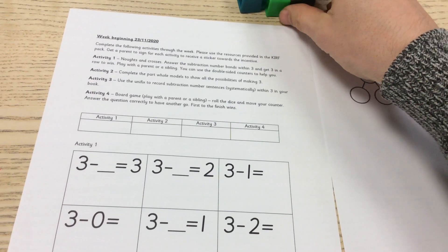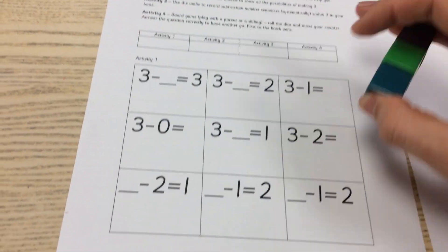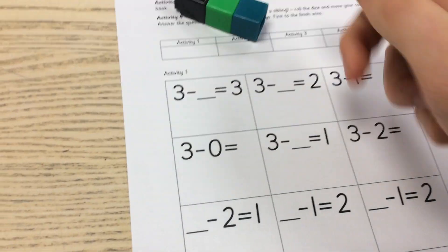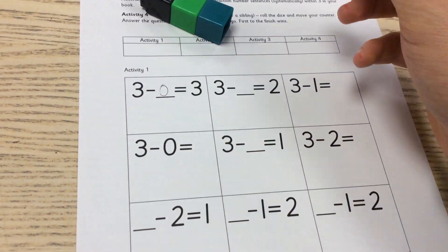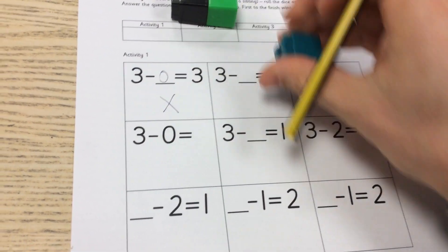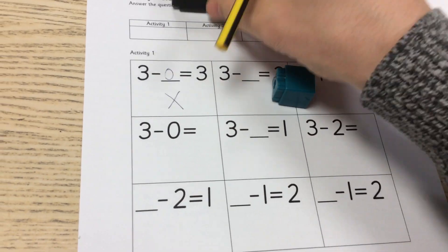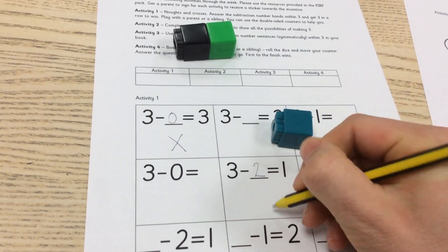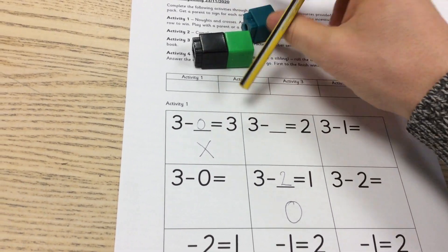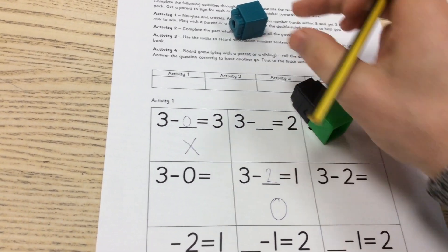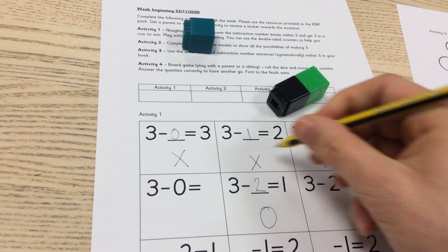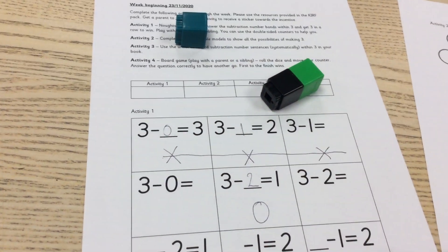I am going to grab 3 unifix counters here because we are working with 3. So I know that 3 take away 0 is 3. 3 take away, and if I have 1 left I have taken away 2. And then 3 take away, if I have got 2 left I know that I have taken 1 away. And there we go. Once you have got 3 in a row you can declare the winner.